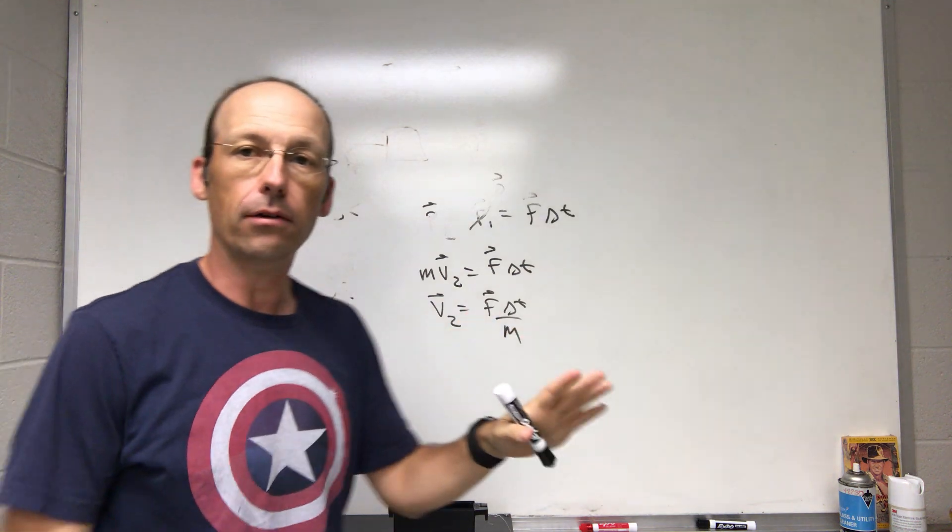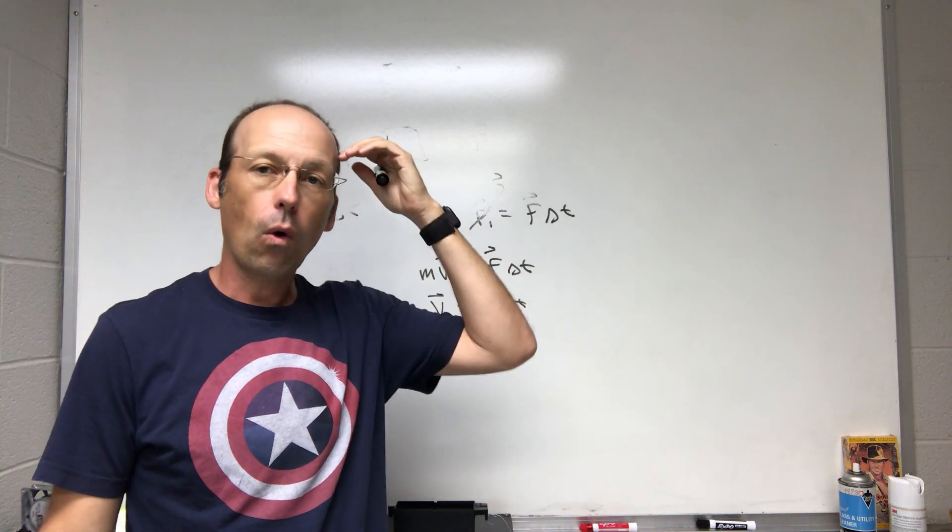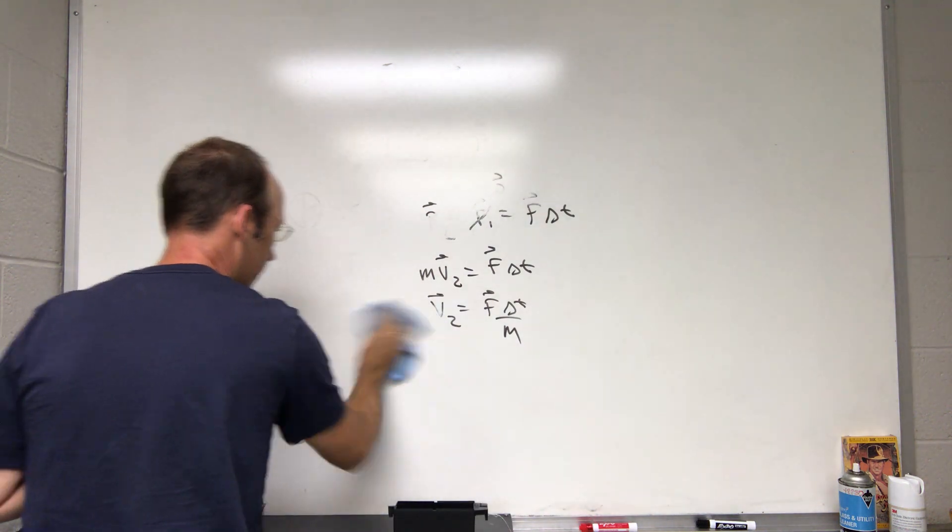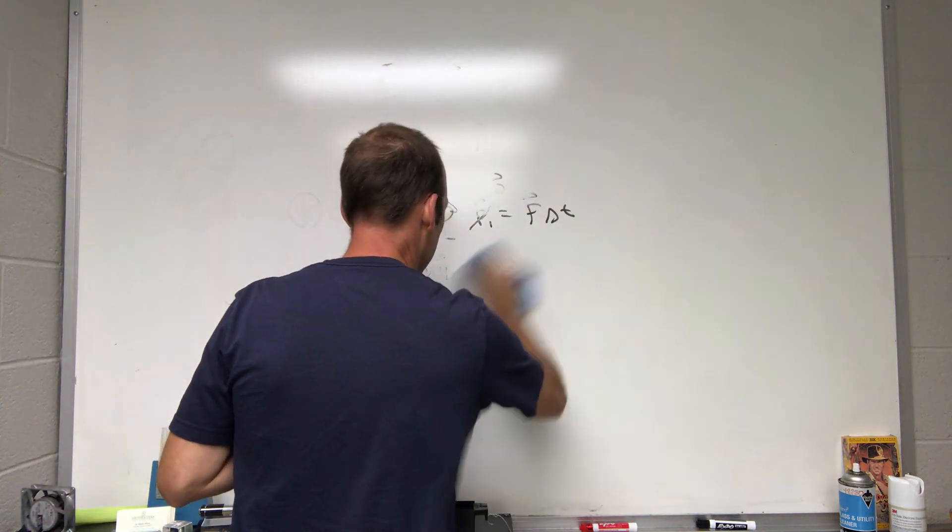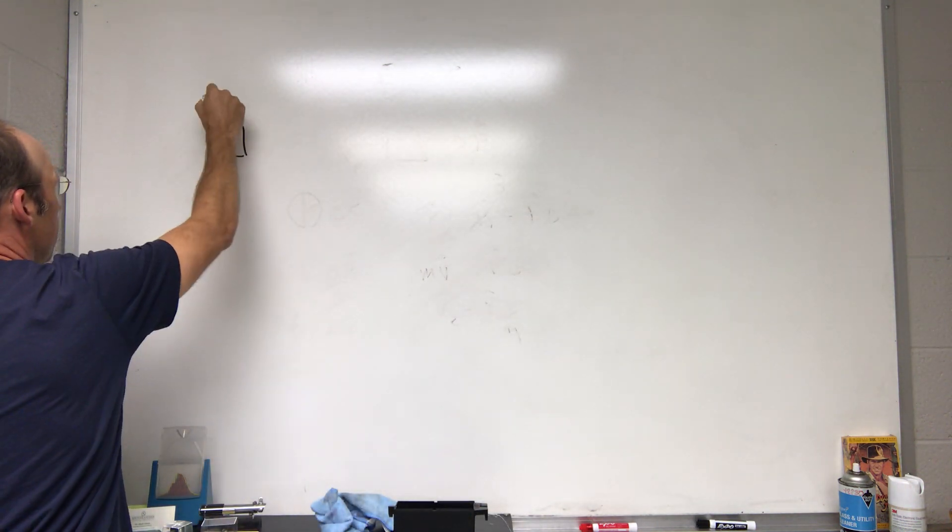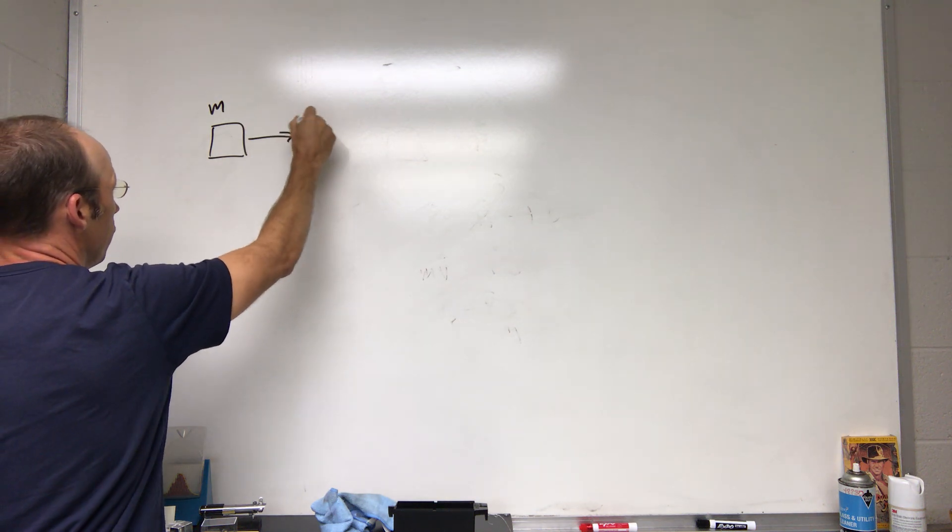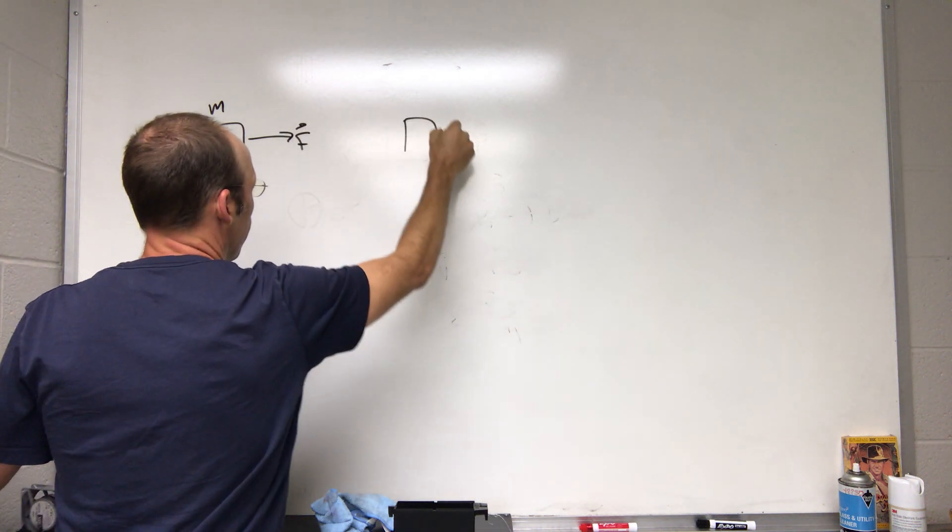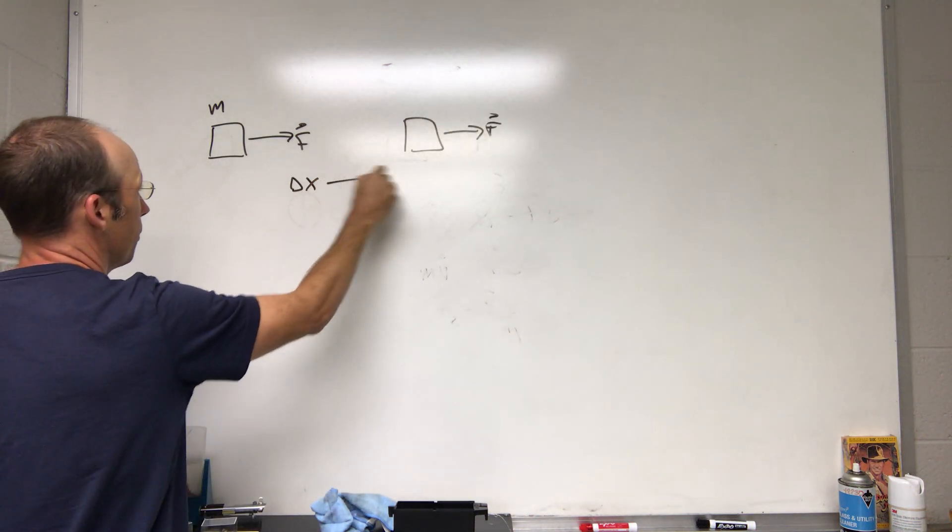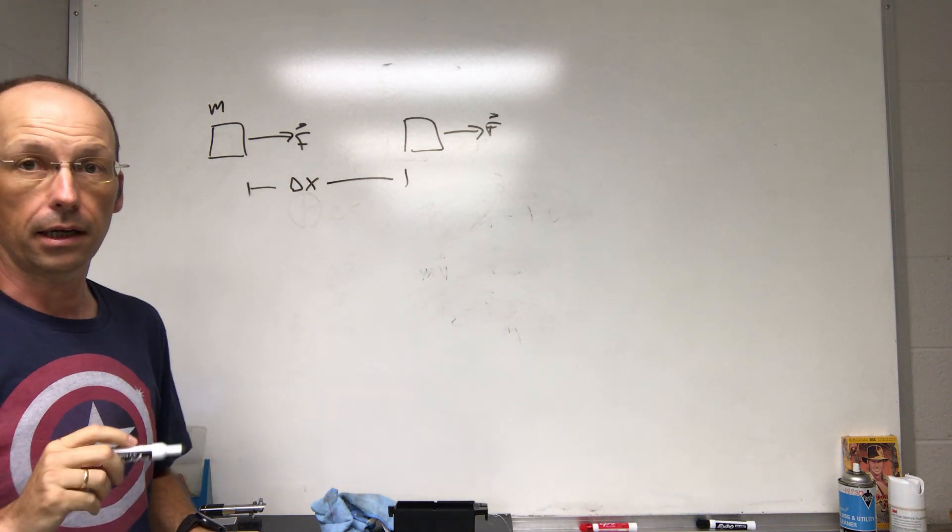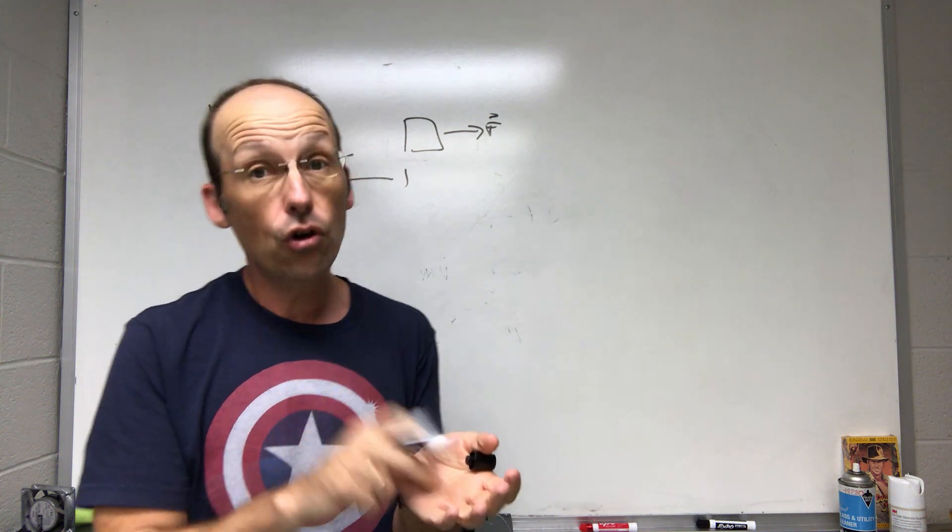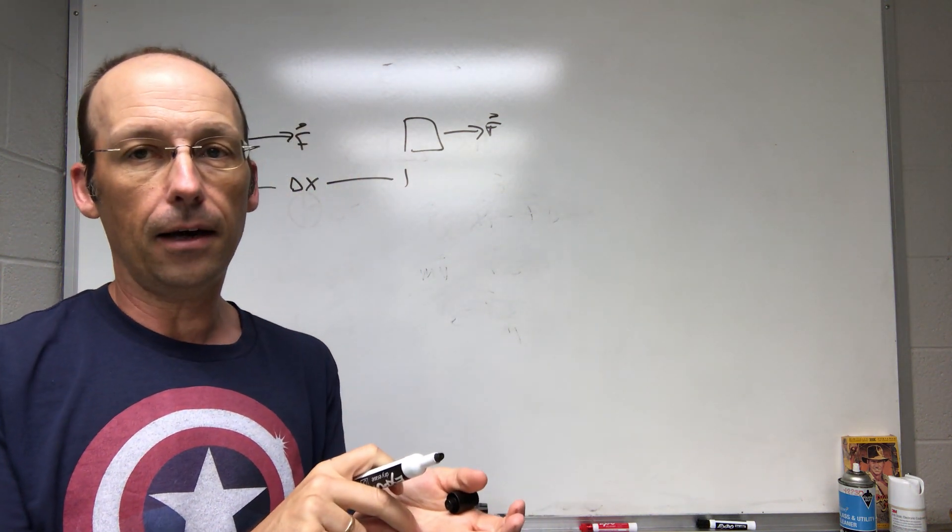Okay, same situation. Now I have the same block, the same force pulling on it, and it goes over here with that same force. But now it moves over some distance Delta X. I'm not pulling it for a time, I'm pulling it over some distance.